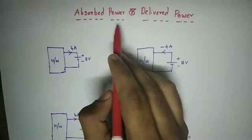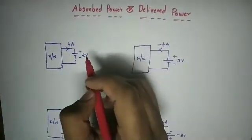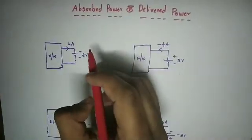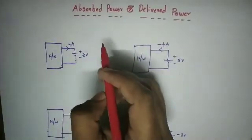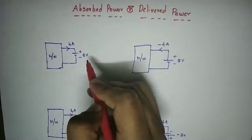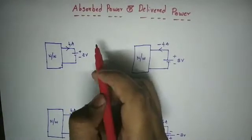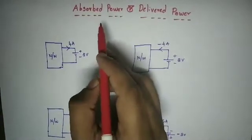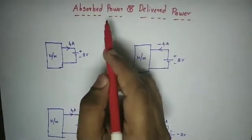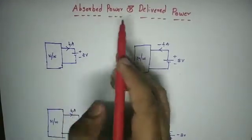First of all, we will talk about Absorbed Power and Delivered Power. In a network, one element or one source will always either absorb power or deliver power.